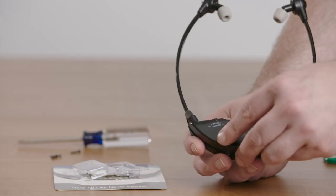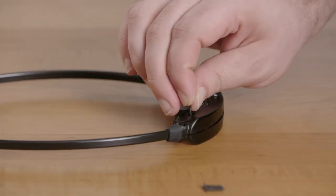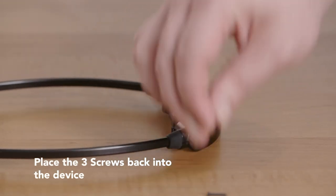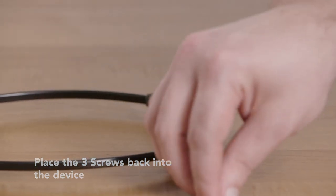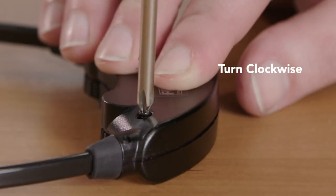Once we have it in like that, put the plate back on and screw it all back together. Just like we did before, we're going to put the three screws back in the three holes once the plates are lined up, and this time we'll screw them in to put everything back together.